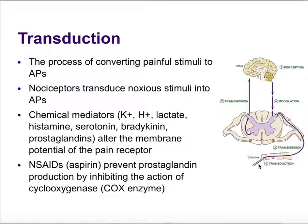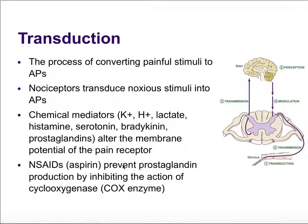Transduction is the process of converting a painful stimulus — like a needle prick — into action potentials. Nociceptors produce noxious stimuli onto our nervous system to activate these action potentials. Chemicals involved include potassium, hydrogen, lactate, histamine, serotonin, and prostaglandins — all of which alter the membrane potential of our receptor to activate an action potential. NSAIDs like aspirin prevent prostaglandins, which is one of the chemicals that helps transduce pain, so by preventing prostaglandins, NSAIDs decrease pain sensation. NSAIDs inhibit the Cox enzyme, which prevents prostaglandins from being produced.